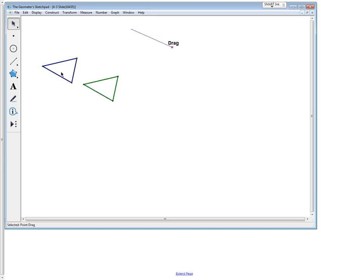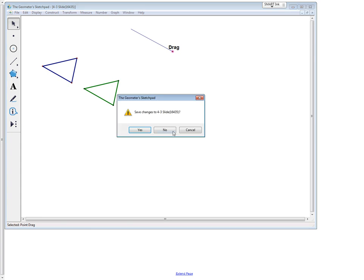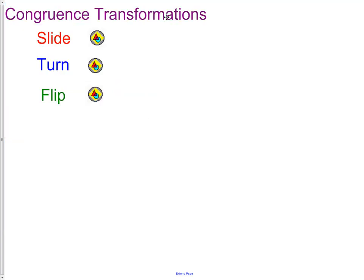So that means the blue triangle and the green triangle, which were identical as they were placed on top of each other, as I slide the green one away, it does not change its shape. So the blue triangle and the green triangle are still congruent. That's why we call this a congruence transformation. Because as we transform or move the figure, it does not change its congruency to the original figure.